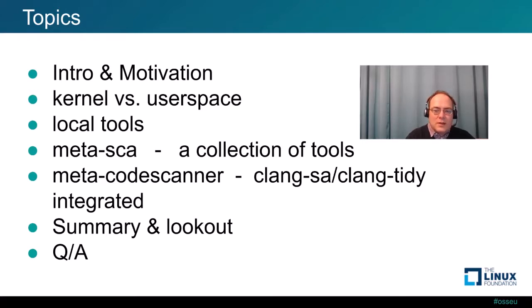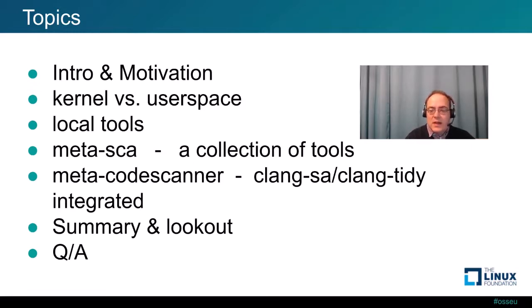I'll start with some introduction and motivation, discuss some differences about kernel versus user space, what tooling exists, and give a quick intro on how to use tools locally during development so you can go hands-on and try that. The main part is then about two projects: one is called meta-SCA, which is a collection of tools that include static analysis, and meta-code-checker, which integrates the code checker project into the Yocto-based build process. In the end we'll do a Q&A.